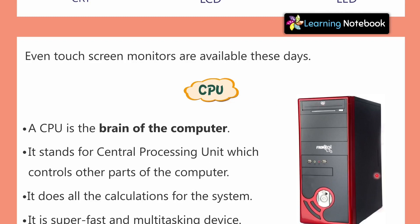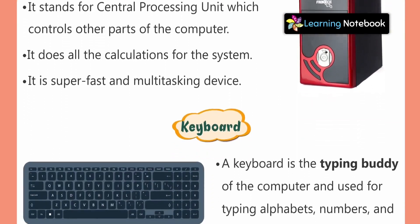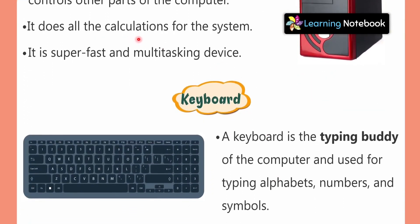The CPU is a very important part of a computer. A CPU is the brain of the computer. Just as we humans have a brain which is very important for us, similarly a computer also has a brain which is known as the CPU. Its full form is Central Processing Unit. It controls the other parts of the computer, just as our brain controls our body parts. It does all the calculations for the system.